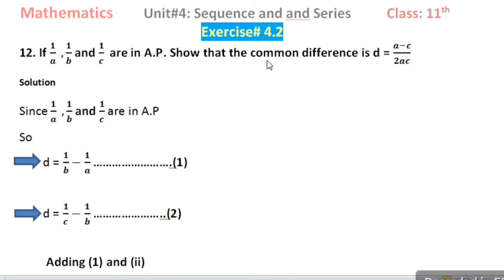If 1 divided by a, 1 divided by b, and 1 divided by c are in arithmetic progression, show that the common difference d is equal to a minus c divided by 2ac.